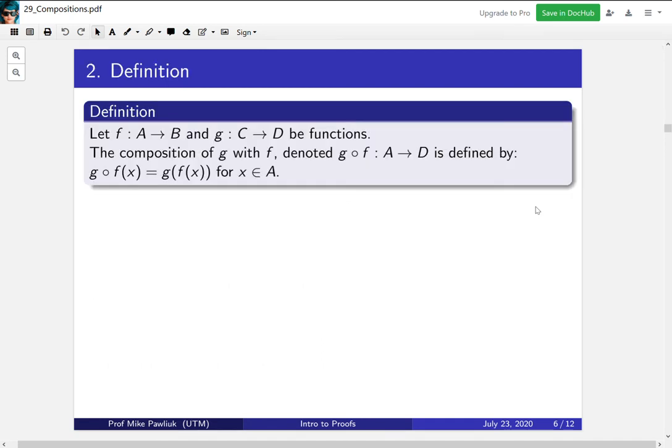The first thing we're going to do is clean up our notation. Let f be a function from A to B, and g be a function from C to D. The composition of g with f is denoted g∘f from A to D, and it's defined by the thing you'd think. You first apply f, then you apply g. So it's g(f(x)).